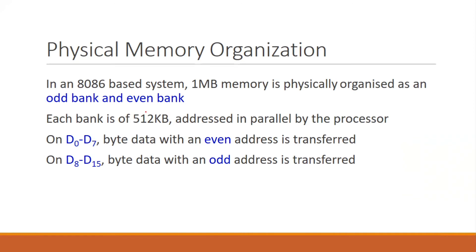One bank is 512KB — it is split half and half. So 512KB is one bank and 512KB is the even bank. We have a memory location story — data is stored at memory locations.